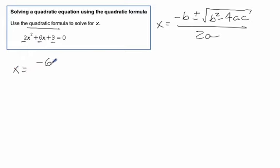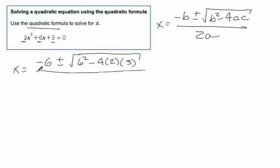The negative b, so that's negative 6, plus or minus the square root of b squared, which would be 6 squared minus 4 times a, which is 2, times c, which is 3. And that's all over 2a, which is 2.